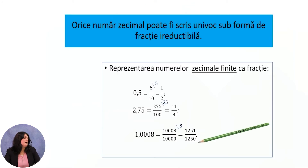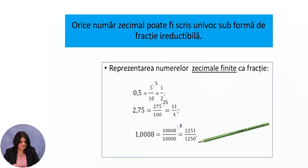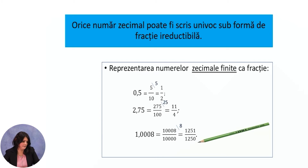Any decimal number can be written uniquely as an irreducible fraction. Finite decimal numbers can be written as fractions as follows: in writing a decimal number as a fraction, we write as many zeros in the denominator as there are decimal places after the comma. For example, 0.5 is 5/10; 2.75 is 275/100; and 1.008 is 1008/10000.